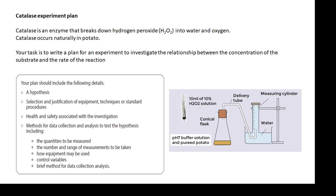Here's one for you to have a go at. If you're in my class, I will give you this for homework. Catalase is an enzyme that breaks down hydrogen peroxide (H₂O₂) into water and oxygen. Catalase occurs naturally in potato. Your task is to write a plan for an experiment to investigate the relationship between the concentration of the substrate and the rate of reaction.